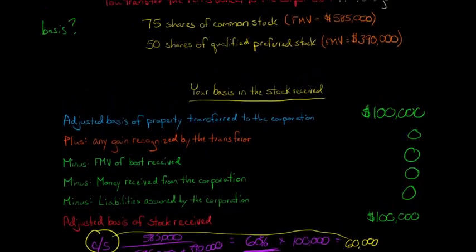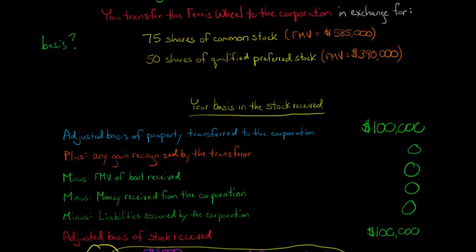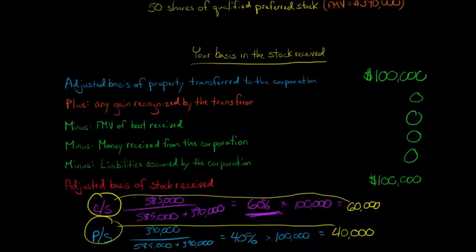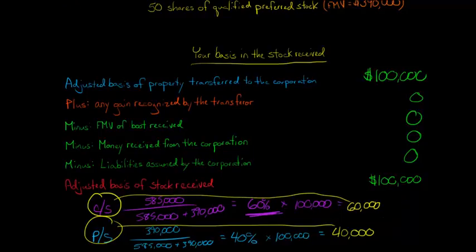So $40,000 goes to the preferred stock and $60,000 goes to the common shares. If you were to sell — say the Section 351 transaction is over and you want to sell the common stock — and someone buys it for $585,000, that would be your amount realized. What do you subtract? The adjusted basis of $60,000, if you sold all 75 of the common shares. So you would have a taxable gain of $525,000.